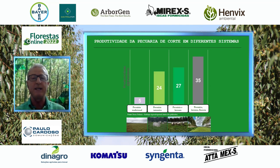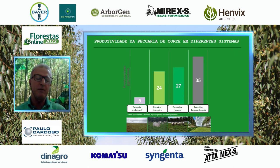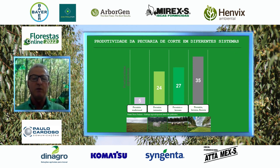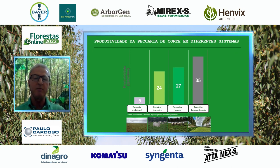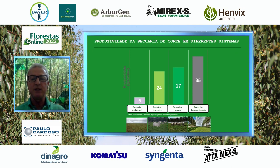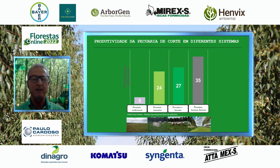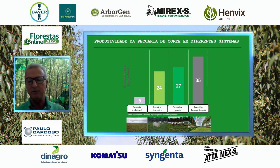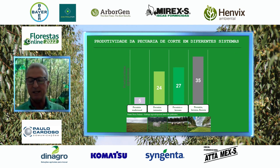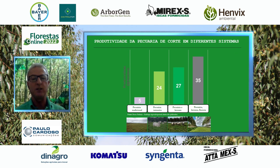Quando comparamos sistemas de produção da pecuária de corte, partindo da pecuária tradicional extensiva com pastagens em degradação, um salto para a pecuária intensiva com tecnologia, adubação e divisão de pastos já gera incremento de quase cinco vezes. Mas quando trabalhamos com integração lavoura-pecuária ou lavoura-pecuária-floresta, o salto é de sete vezes o rendimento da pecuária tradicional. Por que não fazemos isso amplamente? Porque é muito complexo introduzir árvores numa área de pastagem, tendo uma cultura de derrubar tudo para plantar pasto.